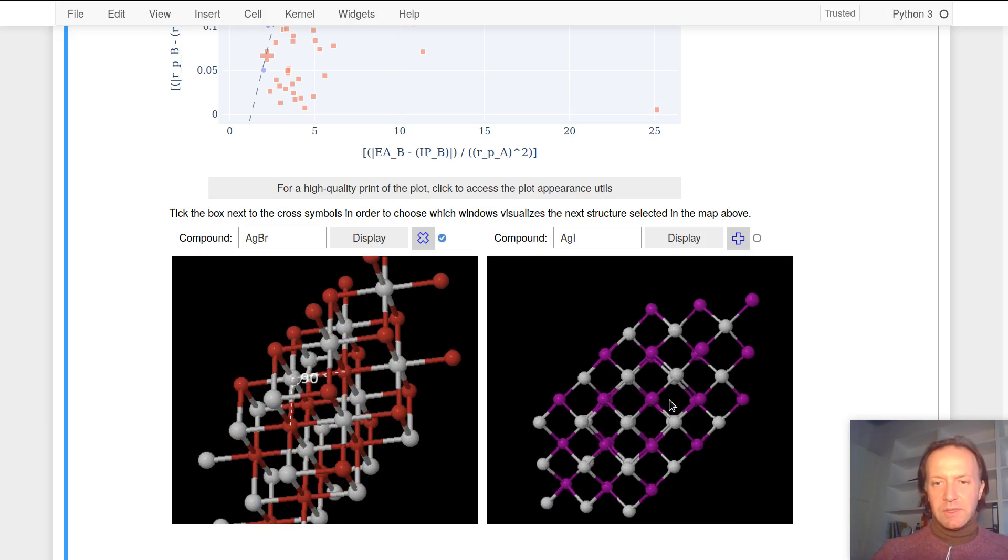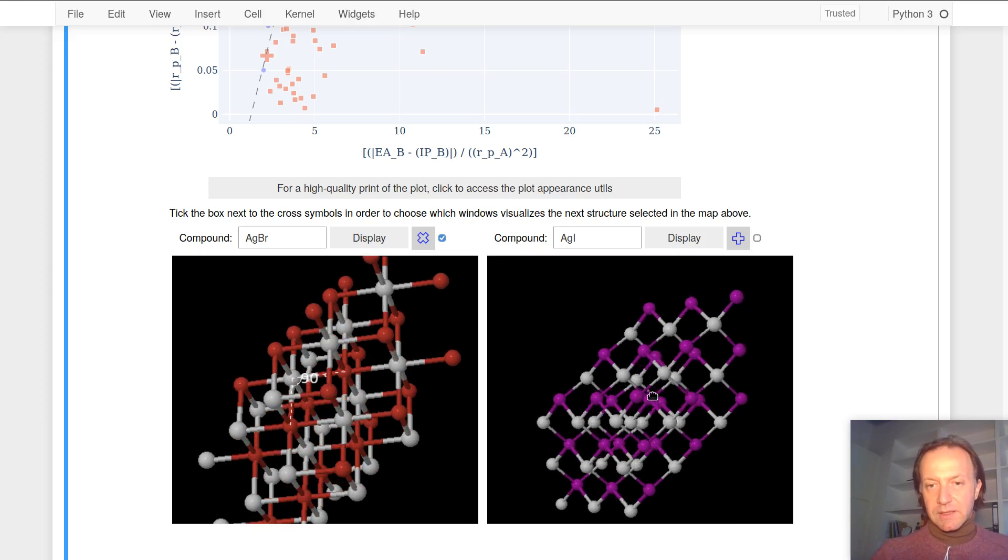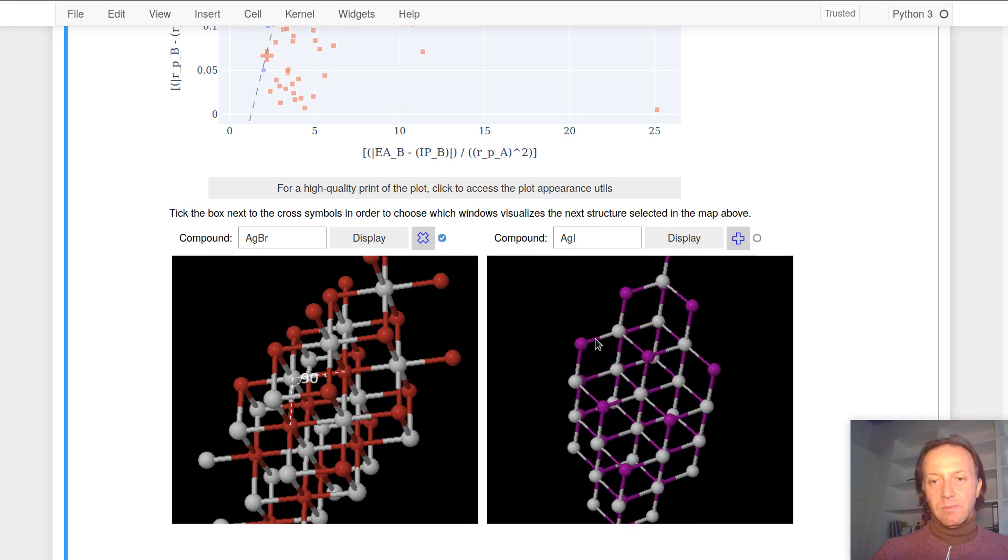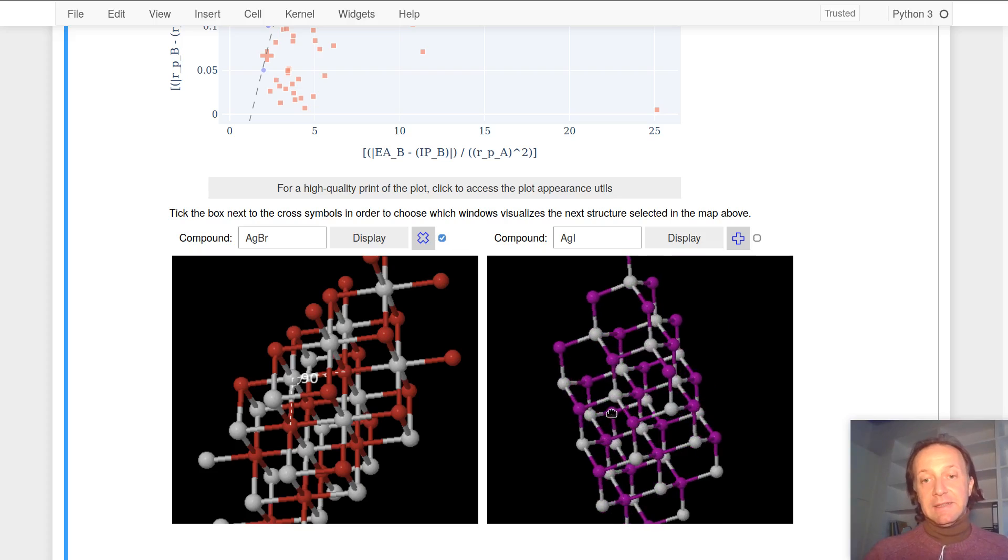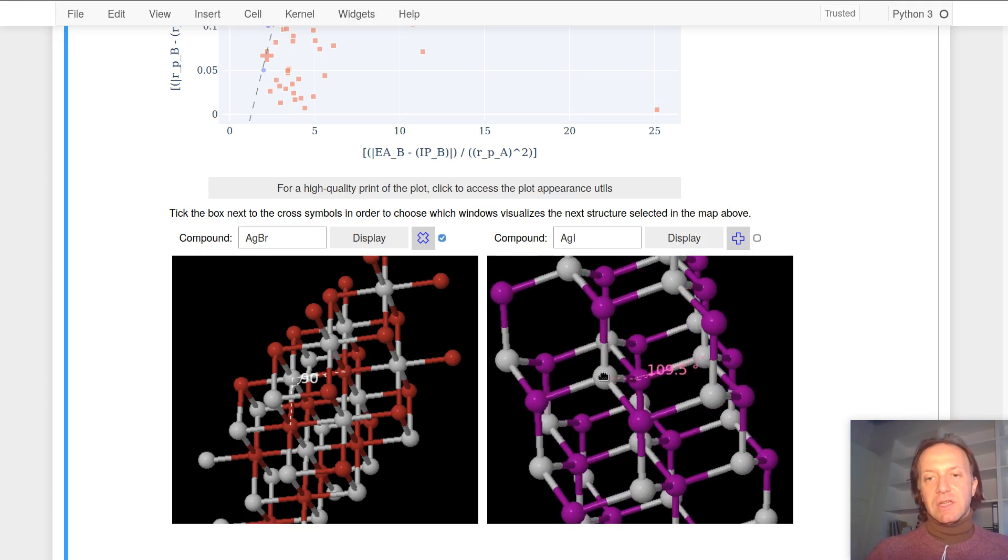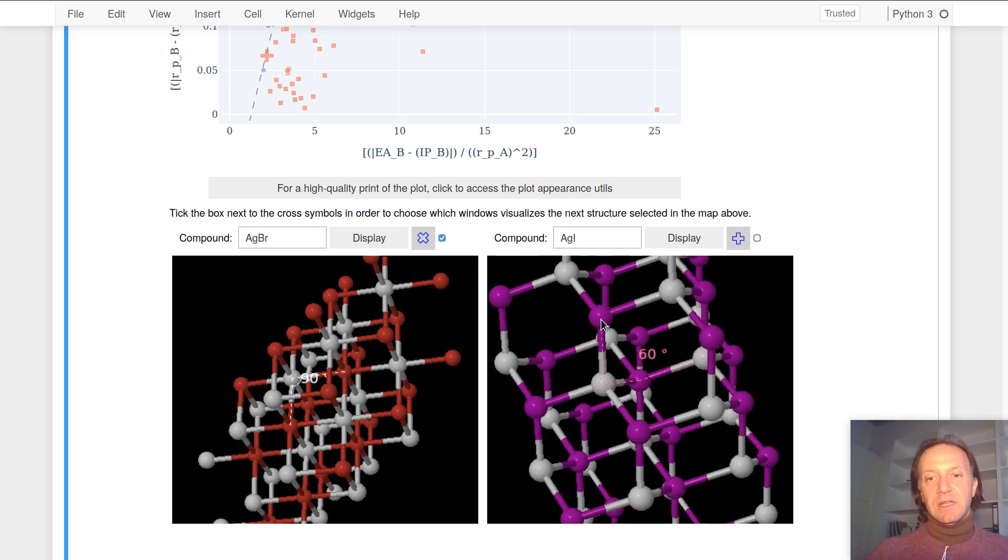This one should be zinc blend, but wait a second, yes yes yes, this is a beautiful zinc blend. And you can check that the angle is indeed the tetrahedral angle and the dihedral is minus 60 or 180 or 60, so exactly what you would expect from this kind of crystal structure.